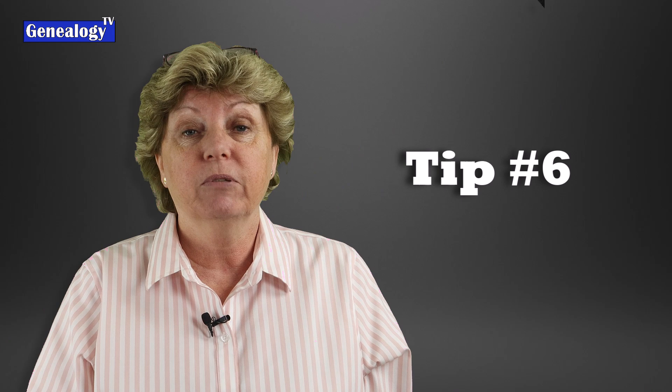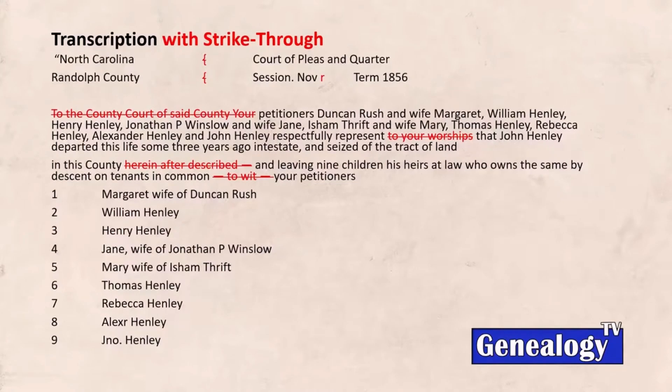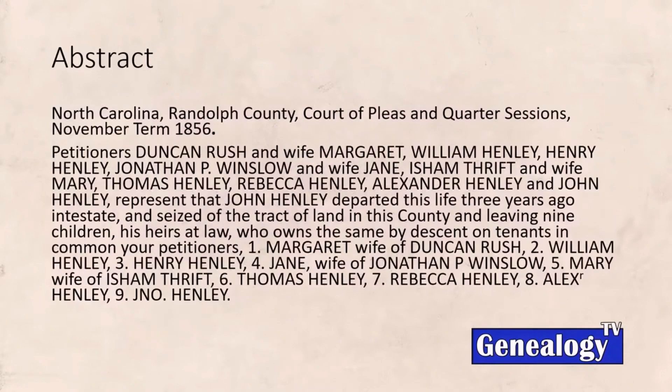Tip number six: abstract the documents. Now that you've transcribed everything, take all the boilerplate information and cross it out. Everything that remains — once you remove all that boilerplate — is the juicy goodness from those documents. That abstracted information is what you want. Pull all of it together into an actual abstract. Creating abstracts is a skill covered at the academy.